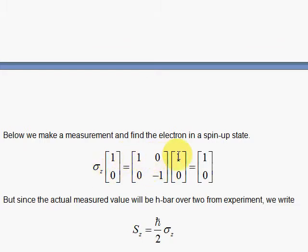So 1 times 1 plus 0 times 0 is 1, 0 times 1 plus negative 1 times 0 is 0, so I get the same state back. The eigenvalue is 1, so if I make a measurement, I'll get 1.